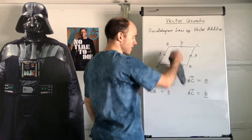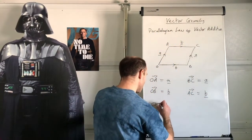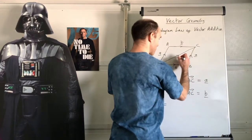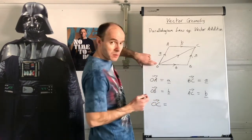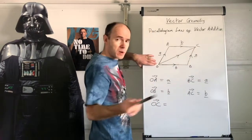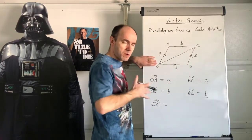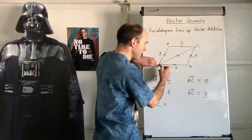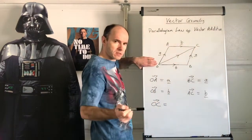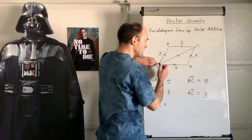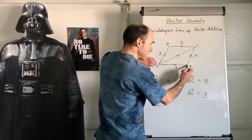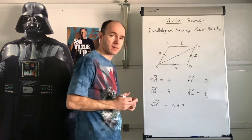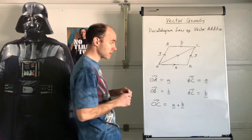So those two vectors are the same and those two vectors are the same. What if I want to work out vector OC? That's the diagonal of the parallelogram. You start at O and find a path to C. There are two different paths: B followed by A, or A followed by B. That's vector addition — b plus a, or a plus b.